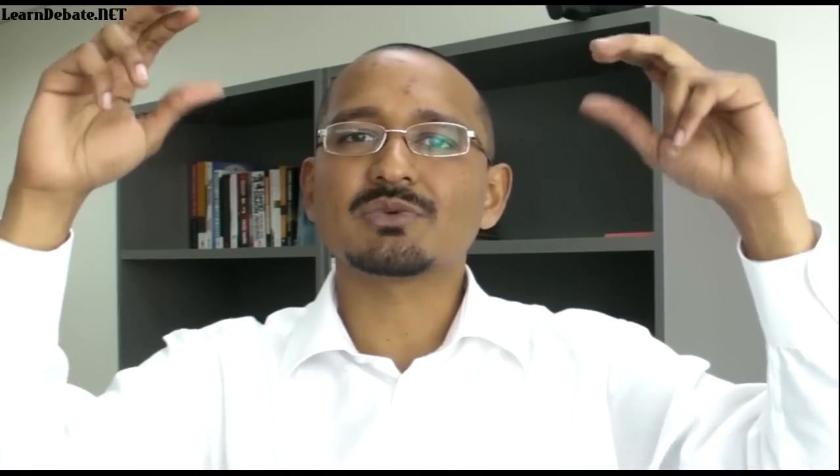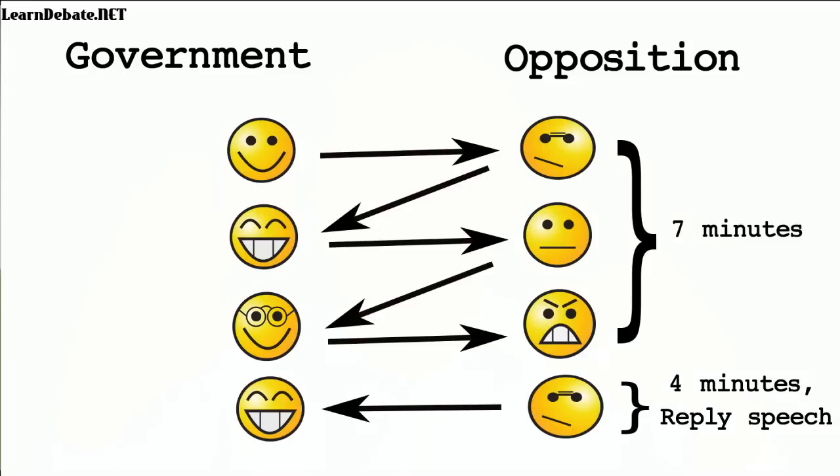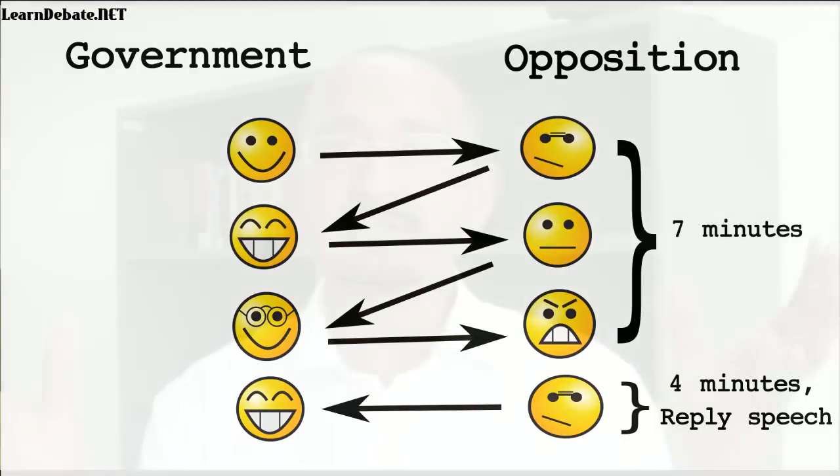So at the end of those six speeches, the government and the opposition each get to make a reply speech. This speech is shorter — remember the earlier speeches were seven minutes long; this speech will only be four minutes long. And remember, the government team started the debate by making the first speech. This time the opposition team will start by making the first reply speech. So in essence, the government team always starts the debate and they always end the debate by having the last reply speech.